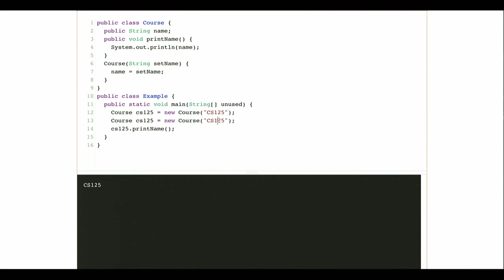Now I have two instances of the Course class — one created on line 12 and a second on line 13. Every one of them has an instance method called printName, and that method has access to the name defined on that class object. Every class has its own name. In this case, the two classes have different names. So now let's try something different — what do you think is going to happen here? Anybody want to venture a guess?